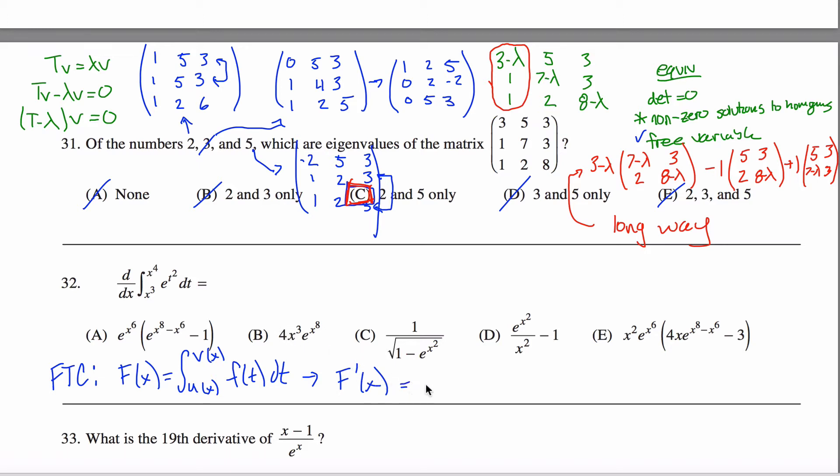Maybe it's easier if I just write it. We get F of, and then the function that I have on the top here is my V's, so F of V of X times V prime of X.